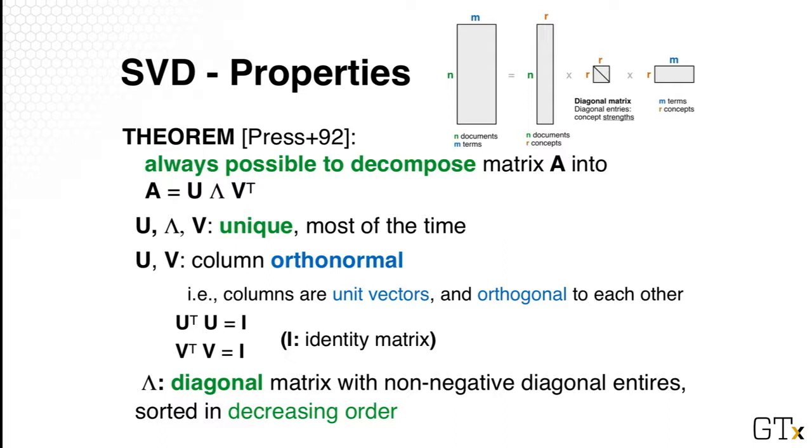So one natural outcome of it is when you do U transpose U, it gives you an identity matrix. And similarly for V transpose V, it also gives you an identity matrix. And we said before, Lambda would be a diagonal matrix with non-negative diagonal entries, and also sorted in decreasing order. You will see why this order is important very shortly.